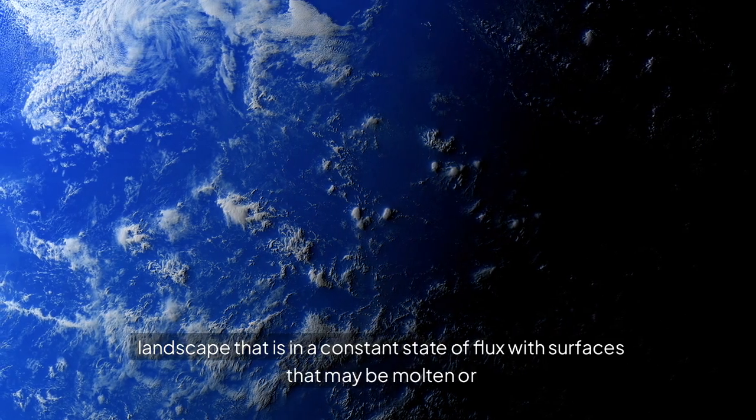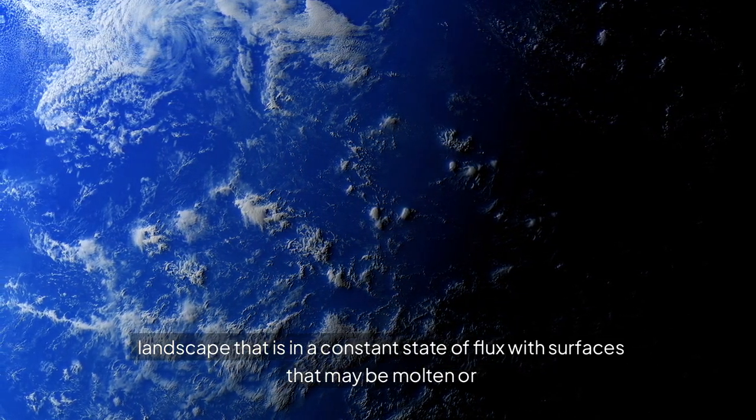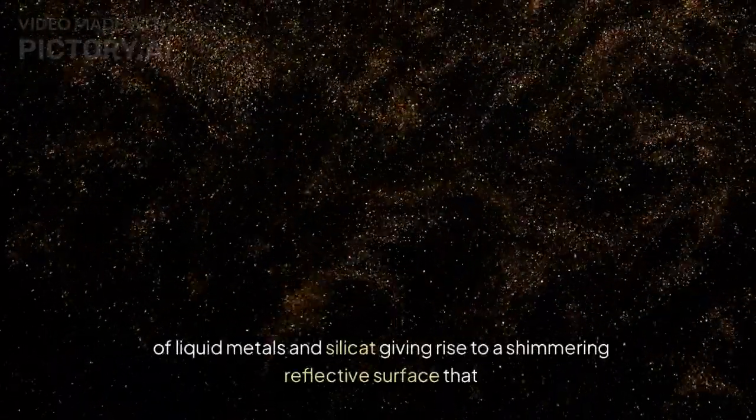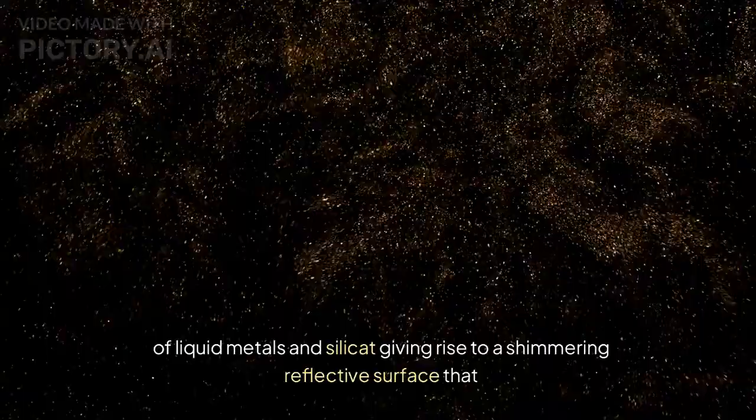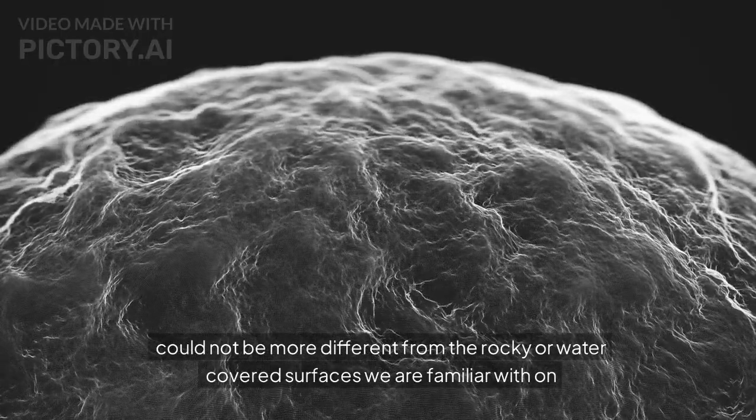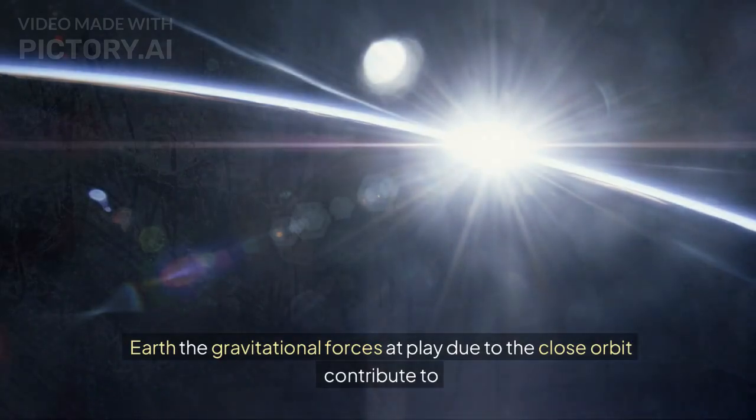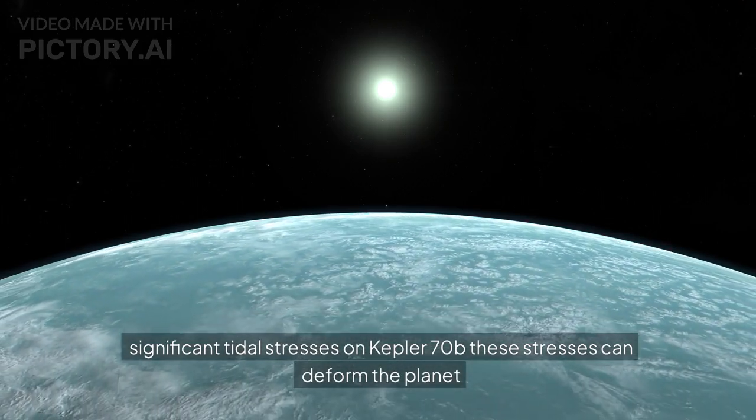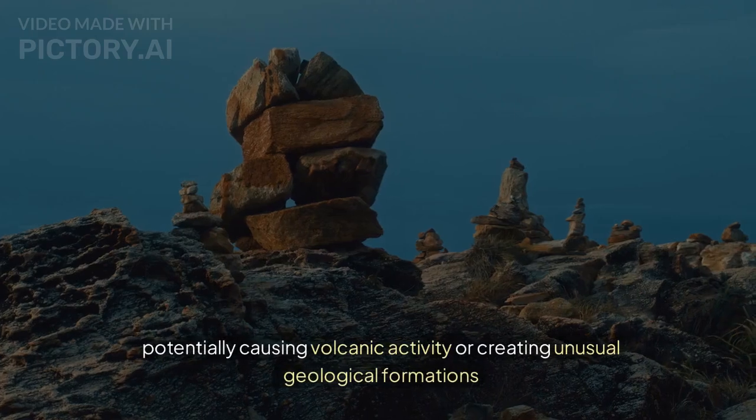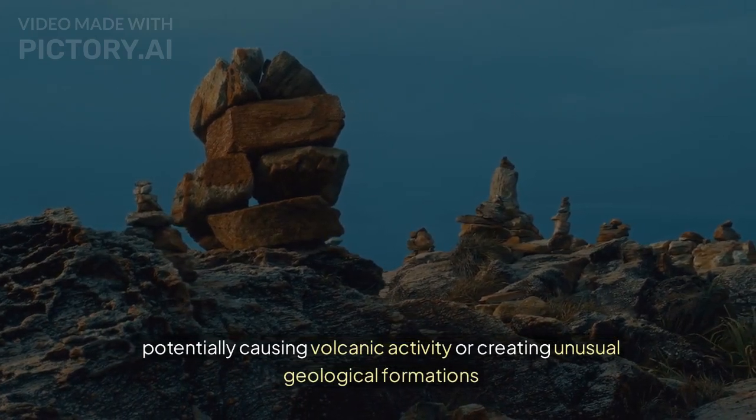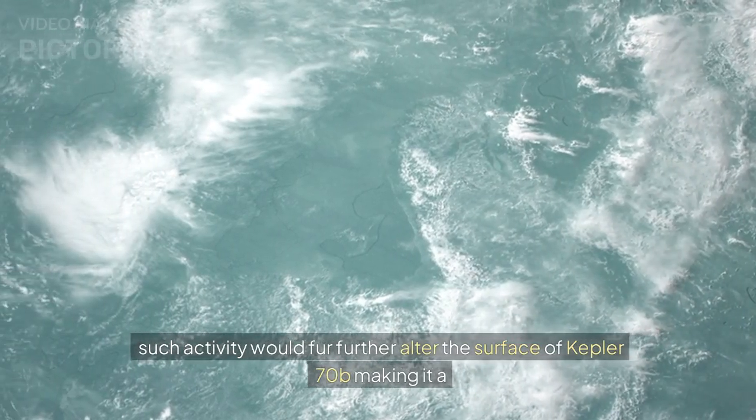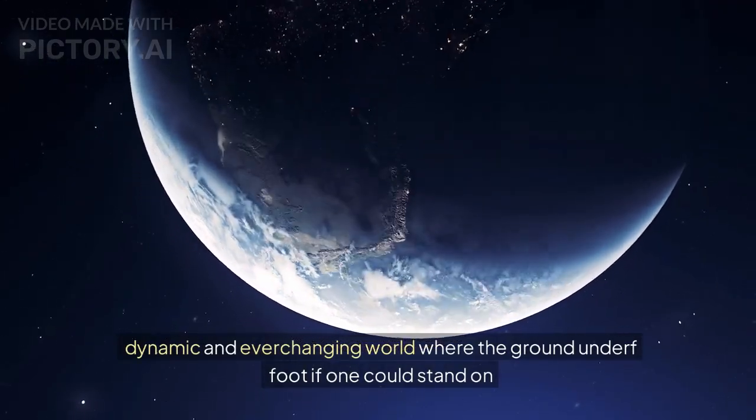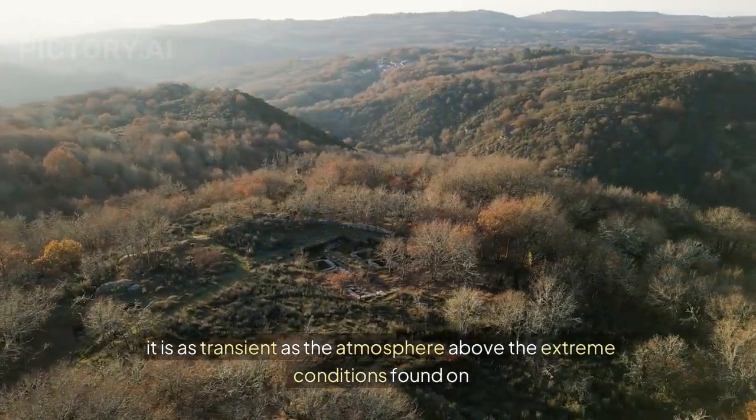This results in a landscape that is in a constant state of flux, with surfaces that may be molten or partially vaporized during the planet's orbit. The extreme heat can create pools of liquid metals and silicate, giving rise to a shimmering reflective surface that could not be more different from the rocky or water-covered surfaces we are familiar with on Earth. The gravitational forces at play contribute to significant tidal stresses on Kepler-70b. These stresses can deform the planet and potentially cause volcanic activity or create unusual geological formations. Such activity would further alter the surface of Kepler-70b, making it a dynamic and ever-changing world.